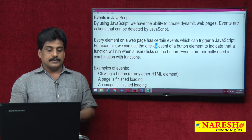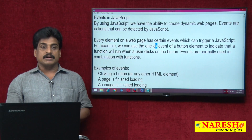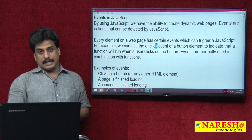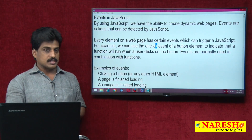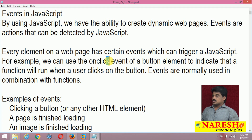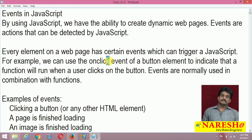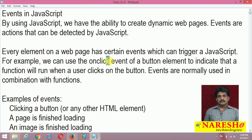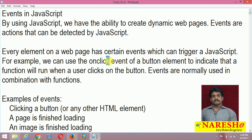By using JavaScript, we have the ability to create dynamic web pages — that is the reason we call it DHTML, dynamic hypertext markup language with JavaScript. Events are actions that can be performed on or detected by JavaScript. Events are normally used in combination with functions, though they can be used without functions. A big list of events exists in JavaScript.